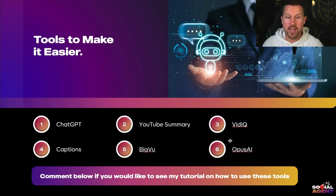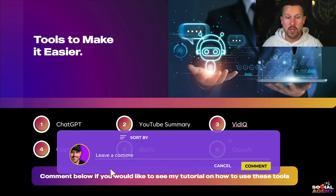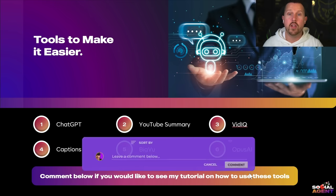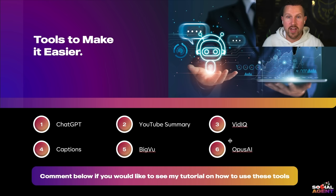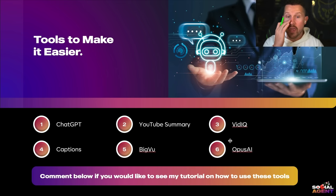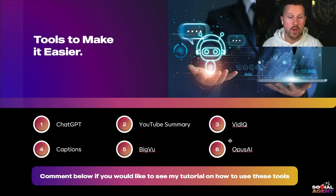Tools to make it easier: ChatGPT is great for video outlines, video topic ideas, and YouTube summaries. YouTube Summary is a free Chrome extension that will summarize another creator's video and bullet points for you so you can reword it with ChatGPT and have an incredible video outlined within a minute. vidIQ is something I swear by — it recommends which tags to use, has AI recommendations for your description and title, and gives you an idea of how your thumbnails will perform. If you're going to leverage video, click the link in the description for vidIQ — it is a life changer.